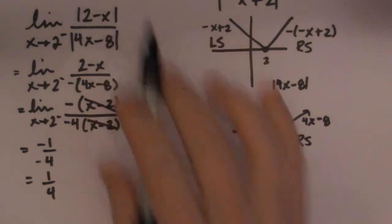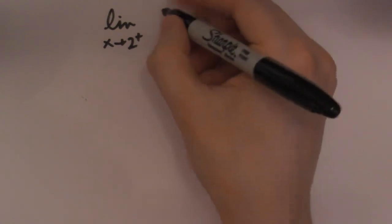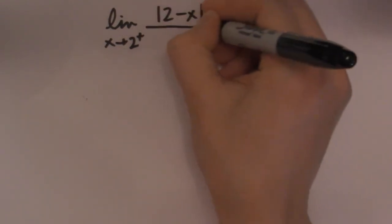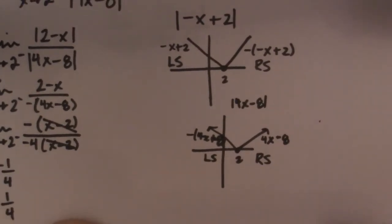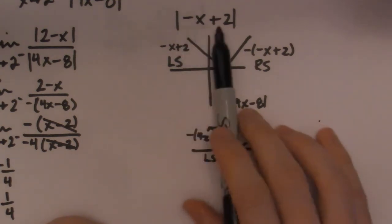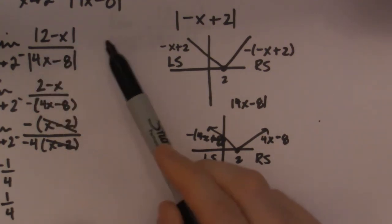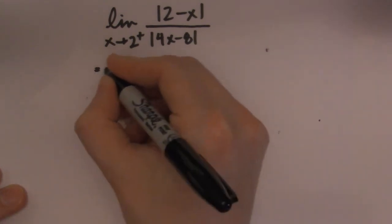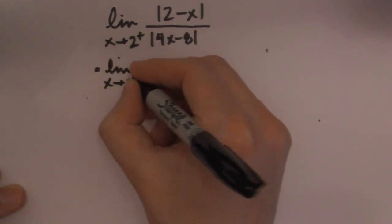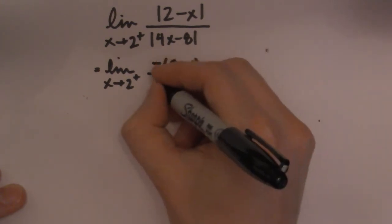Now I have to go ahead and try the right-side limit. So I'll get a new piece of paper for that. I'll do the limit as x goes to 2 from the right side of the absolute value of 2 minus x all over 4x minus 8. Coming back to my graphs: now we're on the right side, so for the first absolute value I choose negative of 2 minus x, which is negative 2 minus x. And since I'm on the right side, I can simply take 4x minus 8.